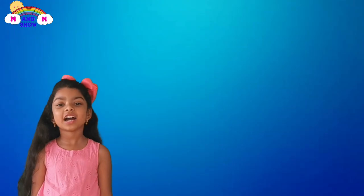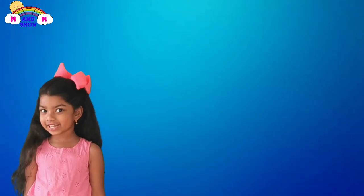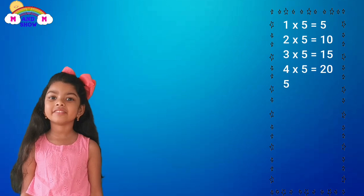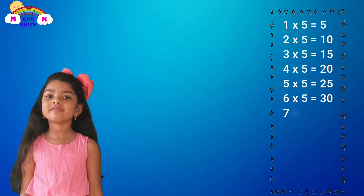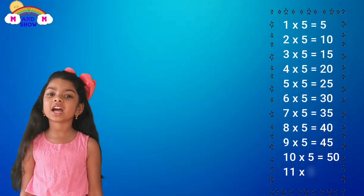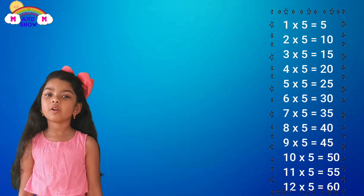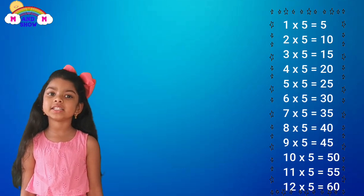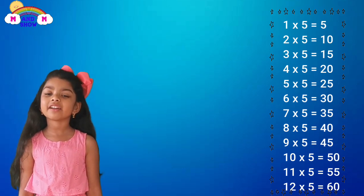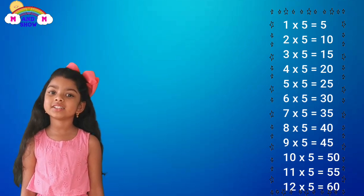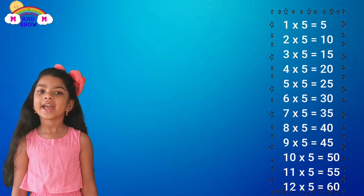Right now it's time for the five timetables. One time five is five, two time five is ten, three time five is fifty, four time five is twenty, five time five is twenty-five, six time five is thirty, seven time five is thirty-five.